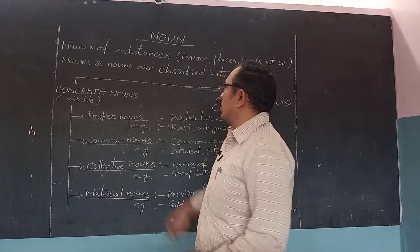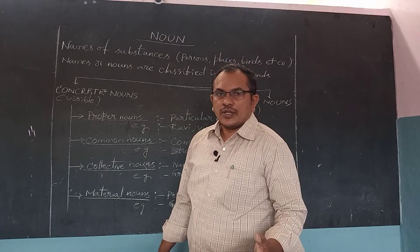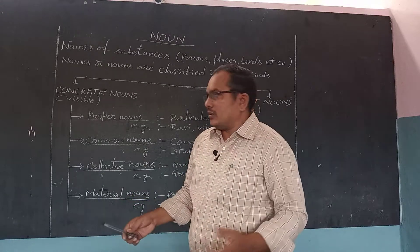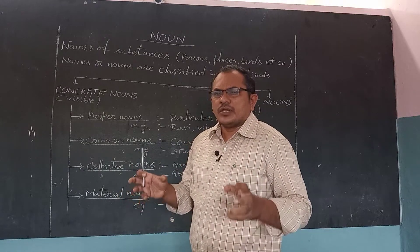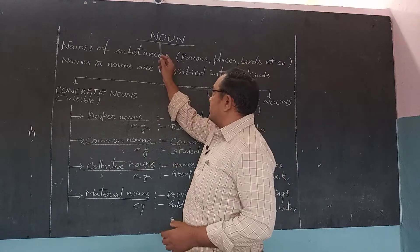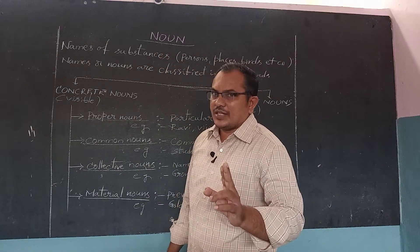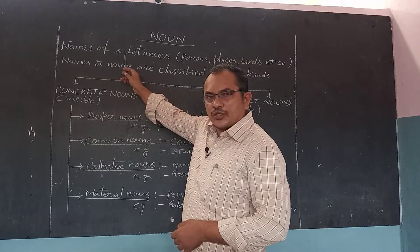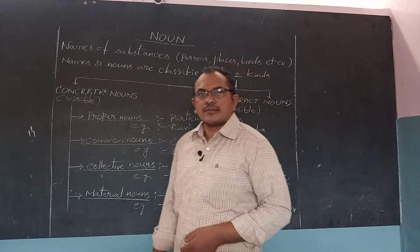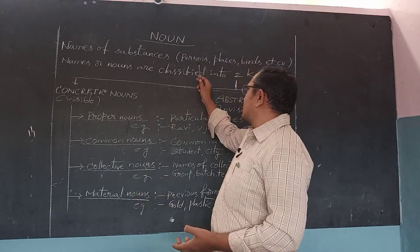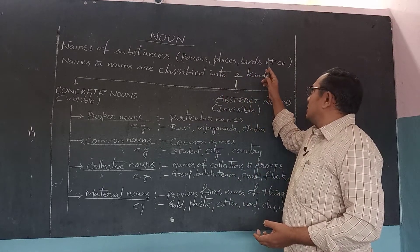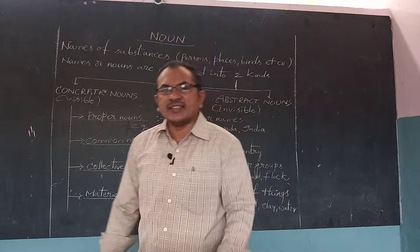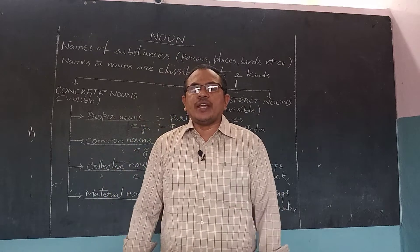Among those eight groups, the first one is going to be explained today — the noun. As you might have heard about it previously in your grammar classes, I would like to explain the same thing but in a different way. Noun is a name. Names of substances — substances means persons, places, birds, animals, things — whatever has a name, that name is identified as a noun.